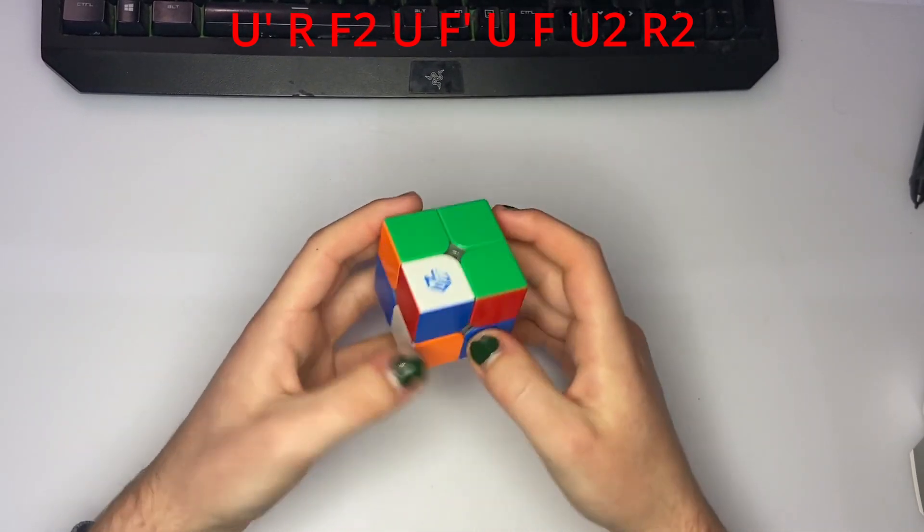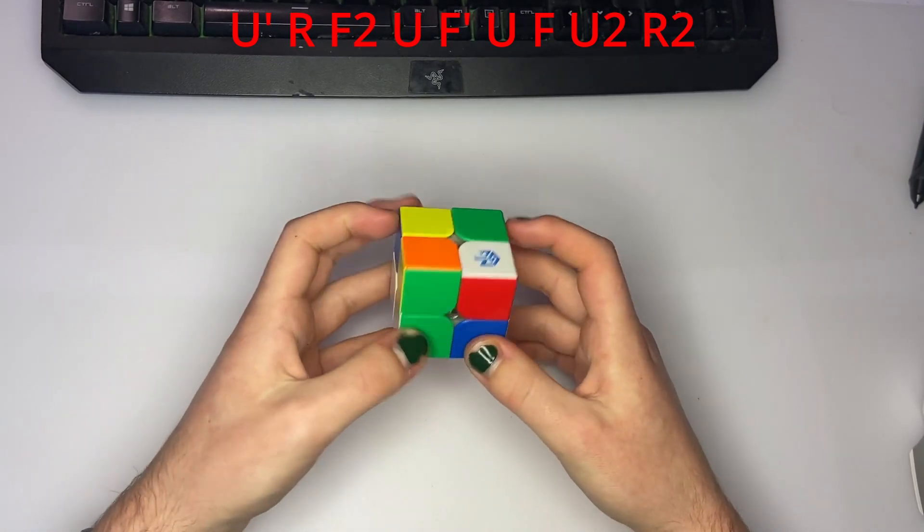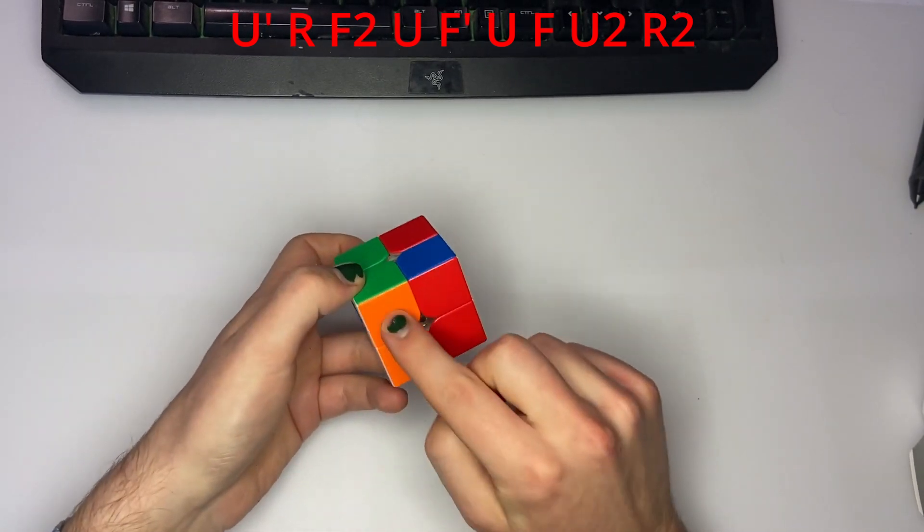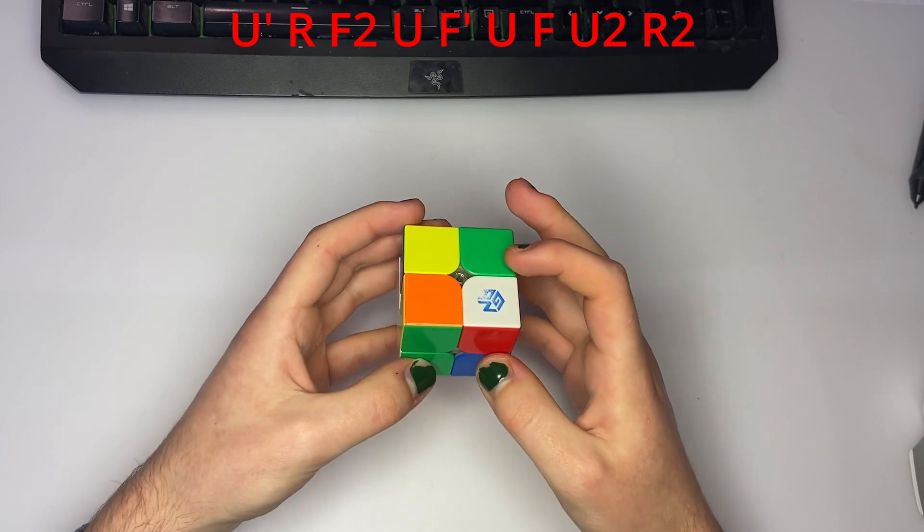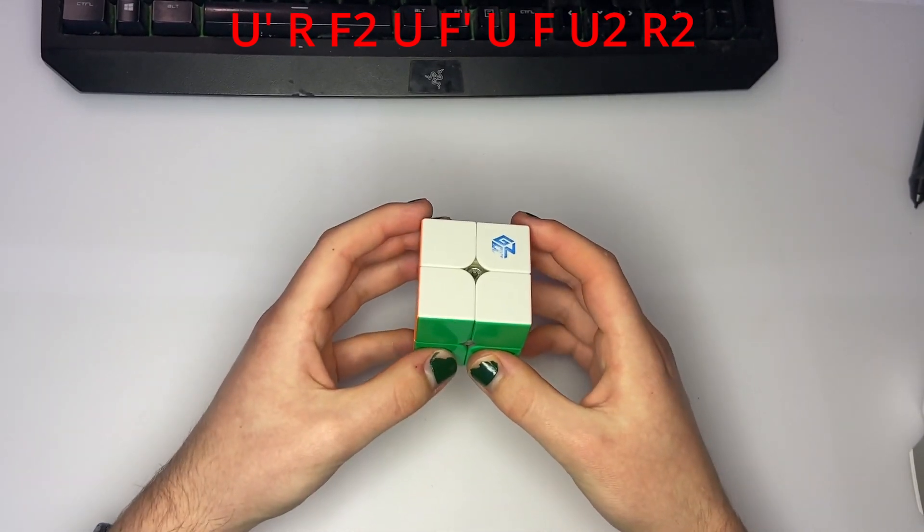So this is the better solution. So instead of making a GEGLS, you want to make a GEGCLL like this. So we have that, and then it's just soon, and you can cancel into R2 at the end. So there's an 8-move solution.